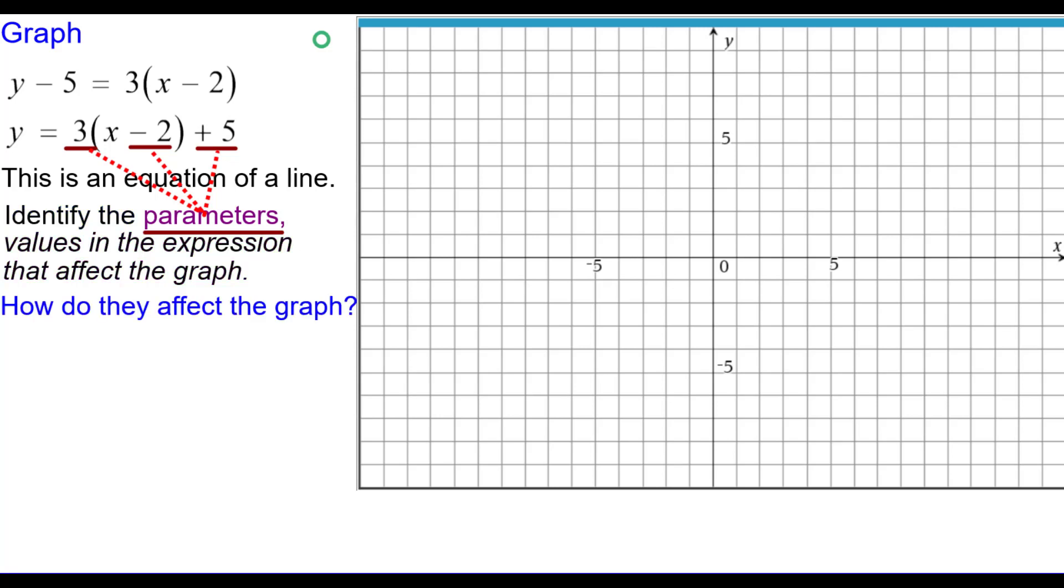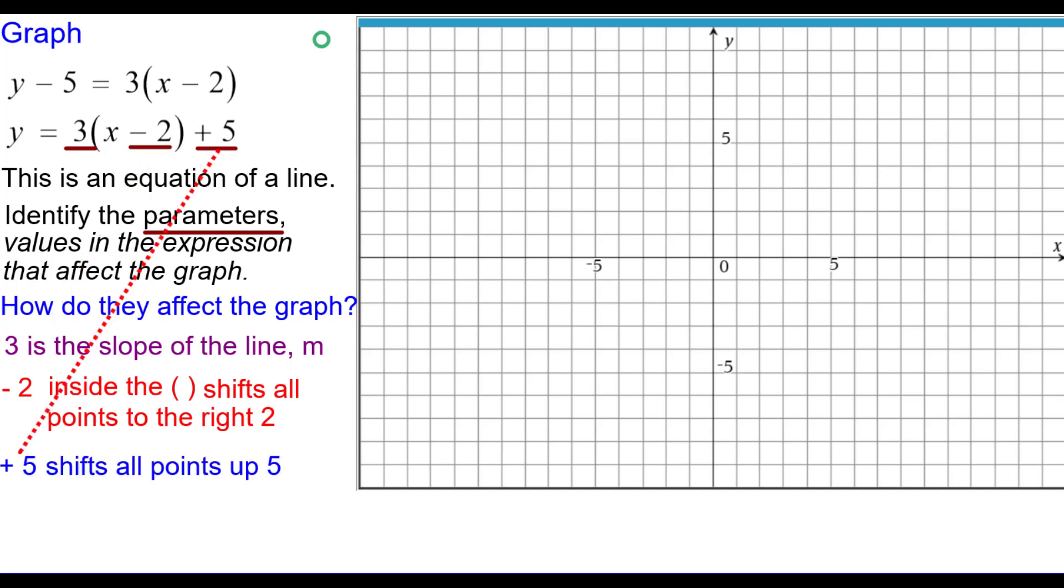So how do they affect the graph? The 3 is the slope of the line. The minus 2 inside the parentheses shifts all points to the right two units. And the plus 5 outside shifts all points up 5.